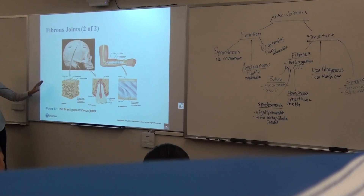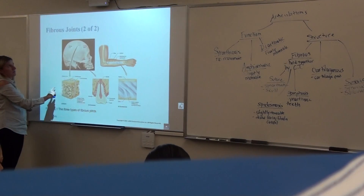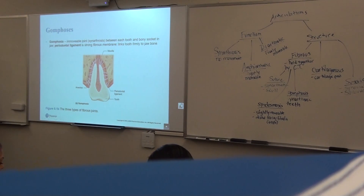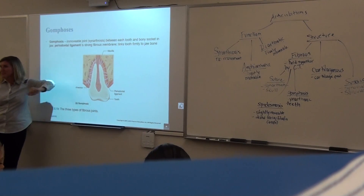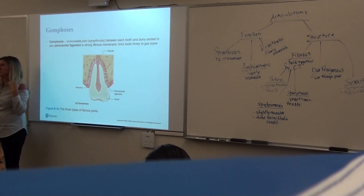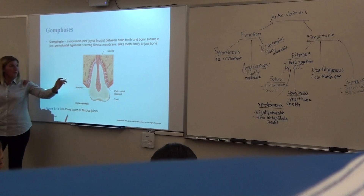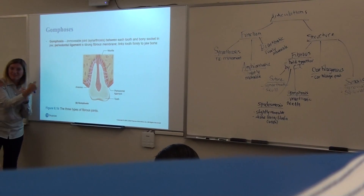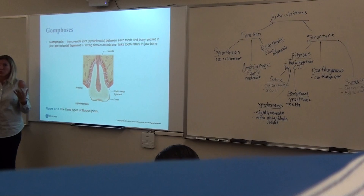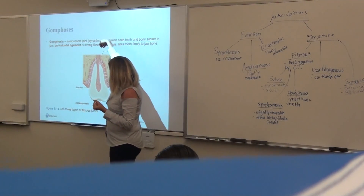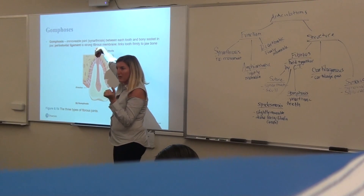Gomphosis — our teeth joints — have little ligaments called periodontal ligaments holding your teeth in. As you get older, just like all connective tissue in your body starts to fail, those ligaments start failing too, which is why you're more likely to lose your teeth as you get older — those periodontal ligaments just loosen up. This is also how children lose their teeth: those periodontal ligaments pull away as the adult tooth comes in behind, which loosens them up and creates a wiggly tooth.